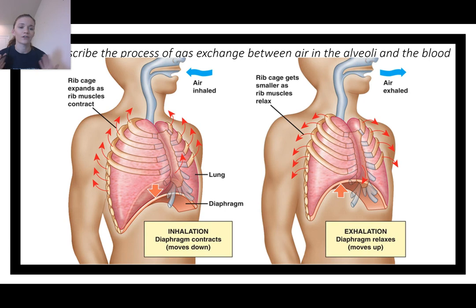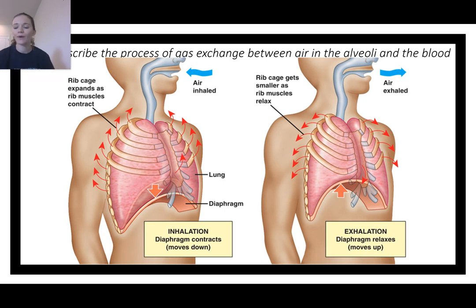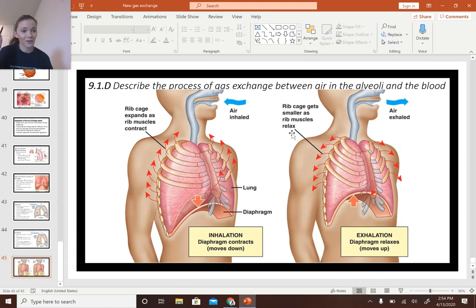Your rib cage can also expand and contract as you breathe — it expands and moves back in with each breath. That's the end of this chapter.